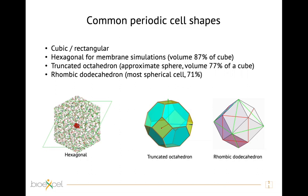In GROMACS, different box types have been developed to reduce the volume compared to the cubic box. The hexagonal box can be used for membrane simulations, while for globular proteins one can use a dodecahedral or rhombic dodecahedral box. The hexagonal box provides an 87% reduction in cubic volume, while the other two provide reductions of 77% or 71%.